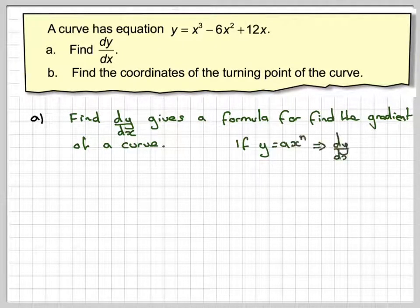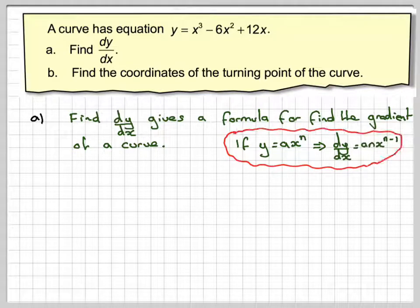So if y is equal to ax to the n, then the gradient dy by dx is that you bring down the power, which is n, and put it in front. So we get a, n, x, and then you reduce the power by 1.